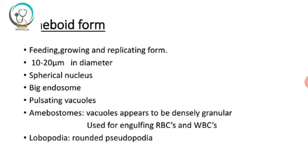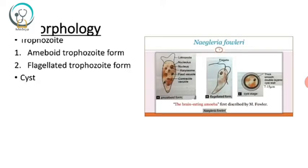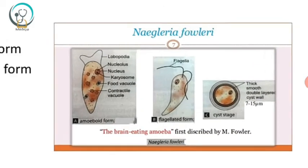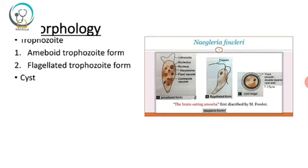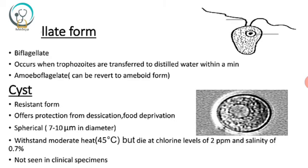The amoeboid form is the feeding, growing, and replicating form, having a diameter of about 10 to 20 micrometers. It has a spherical nucleus, a big endosome, and pulsating vacuoles. There is another structure called amoebostomes — vacuoles that appear densely granular, used for engulfing RBCs and WBCs. Another structure called lobopodia is meant for active motility.